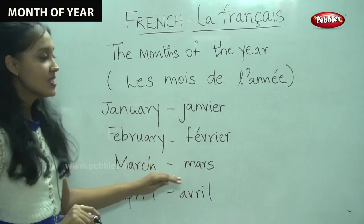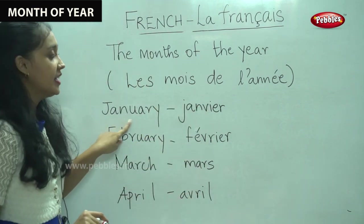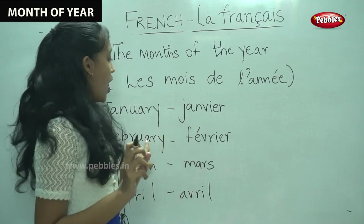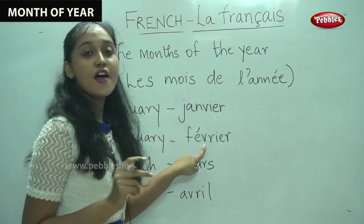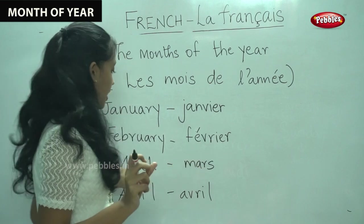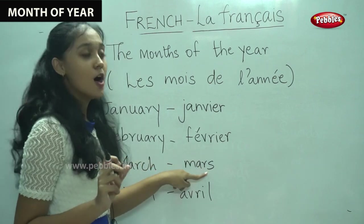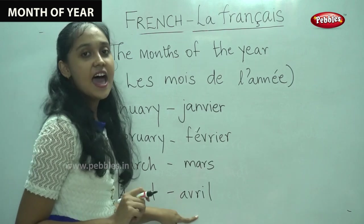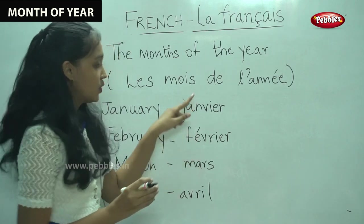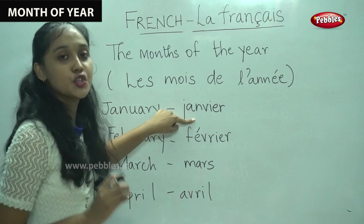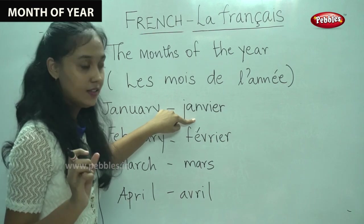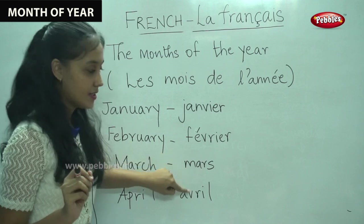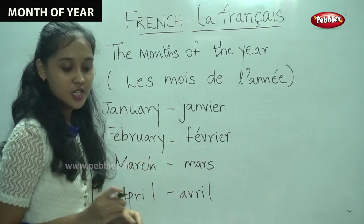So, let us say these four months once again. January is Janvier. February is Février. March is Mars. April is Avril. Once more, let us say these four months: Janvier, Février, Mars, Avril. Now, let us go on to the next four months.